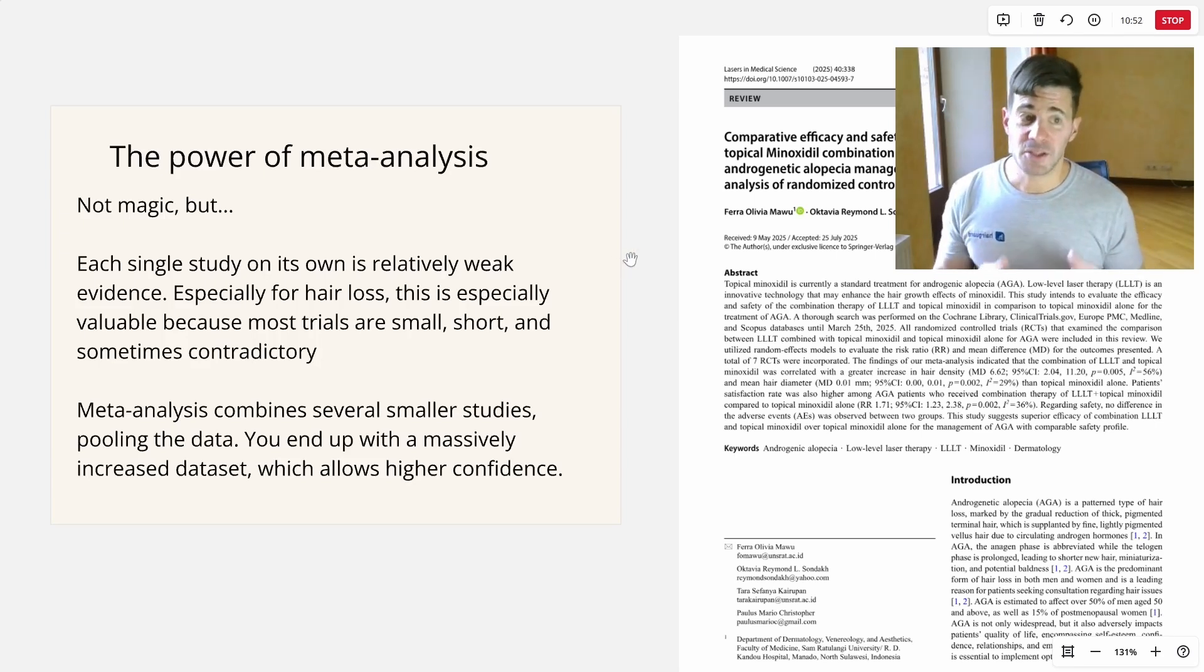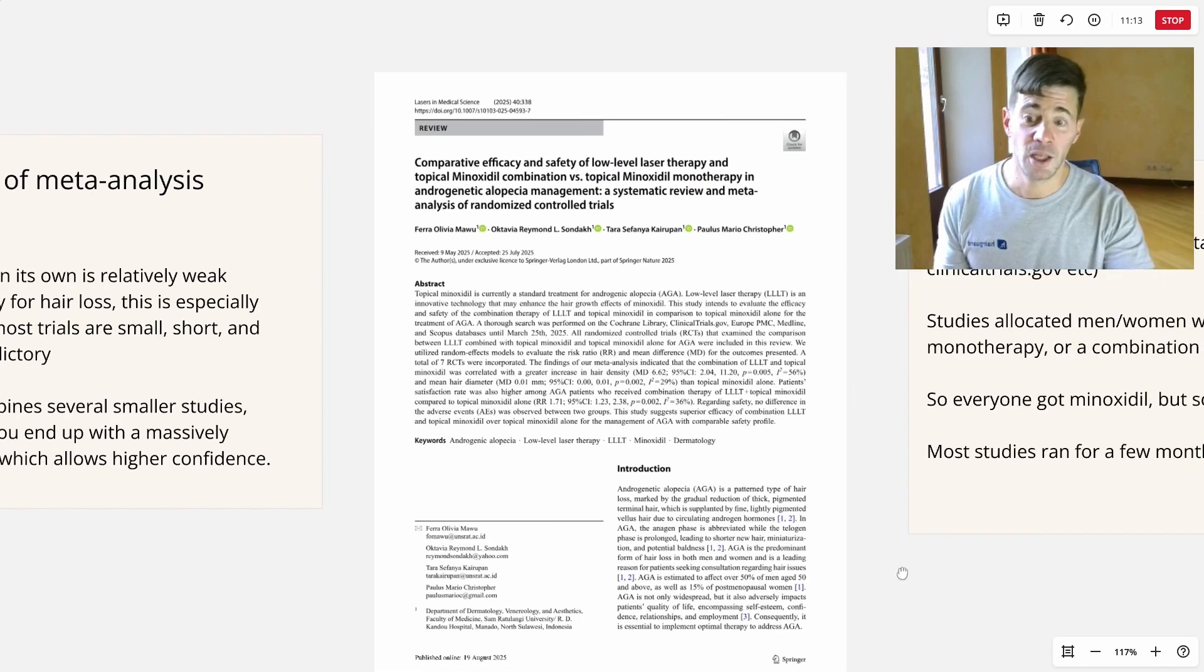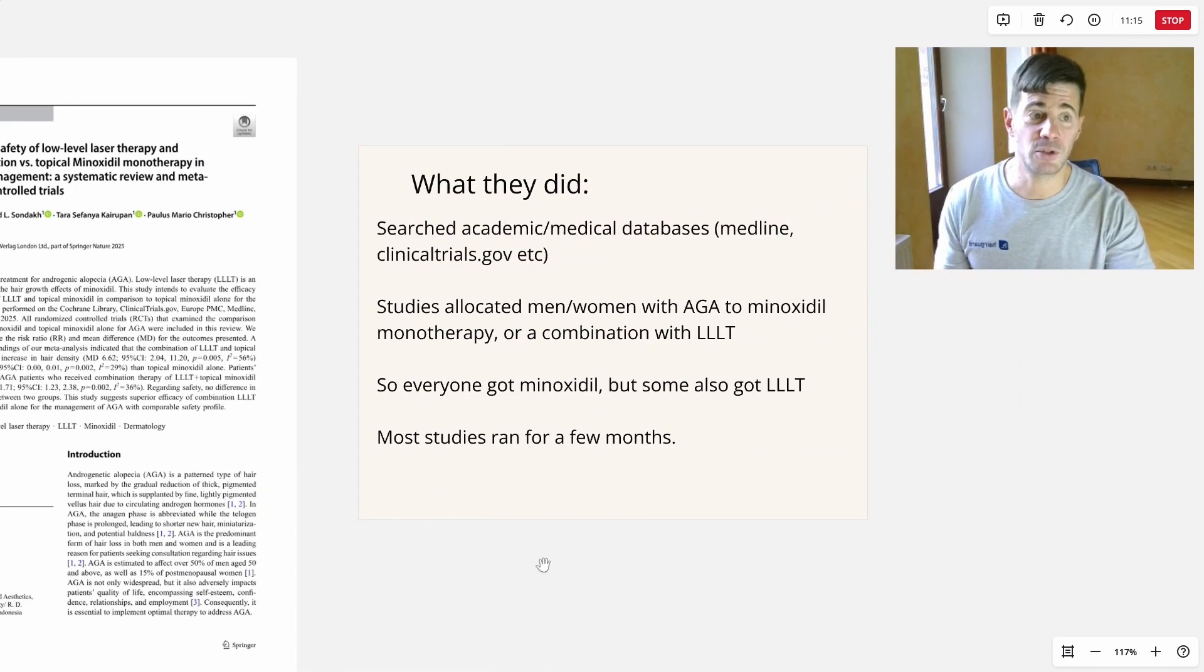So what is a meta-analysis? A meta-analysis is a study of studies. It's a study that looks at various other studies and combines their data and then gives you one big result. Meta-analysis is a very strong research method because each single study on its own is relatively weak, especially for hair loss, where you have sometimes small samples, contradictory results. But meta-analysis combines all these studies and it pools the data and you end up with a massively increased data set, which allows you for higher confidence. So we give more attention to meta-analysis than individual studies.